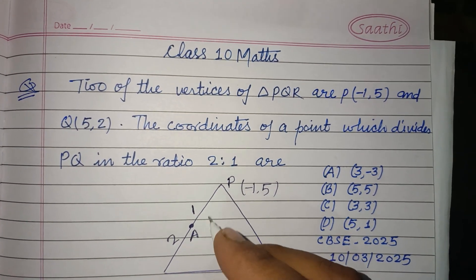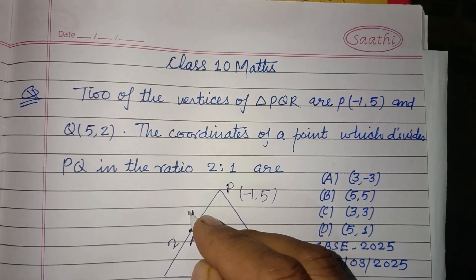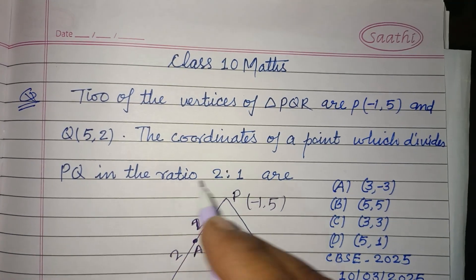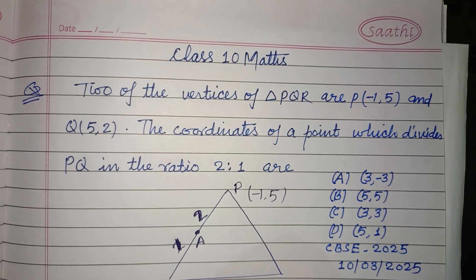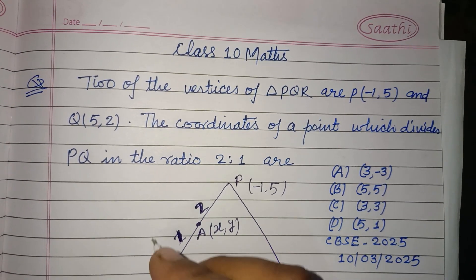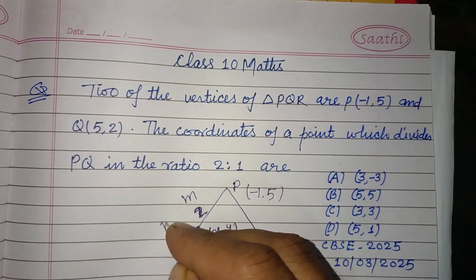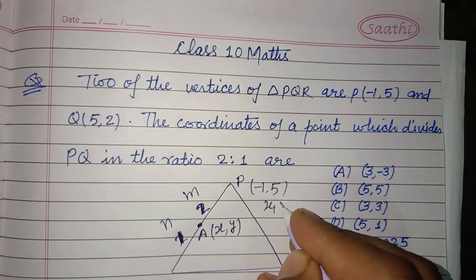We divide in 2:1, these parts QA. Because we are starting from P to Q, so this is 2, this is 1. And let its coordinates be X and Y. So here M:N, this is X1,Y1.